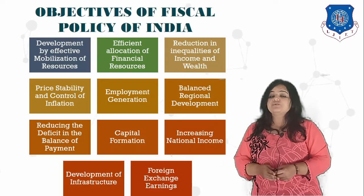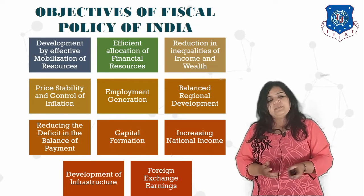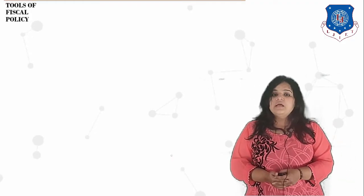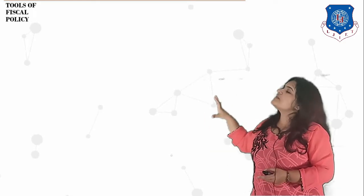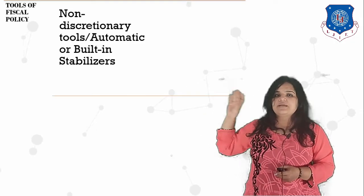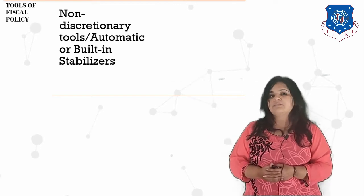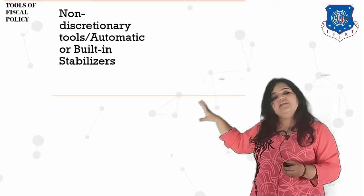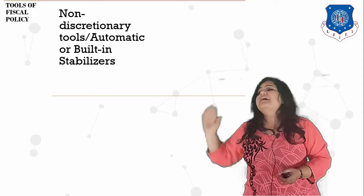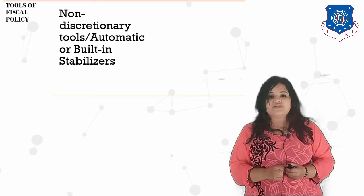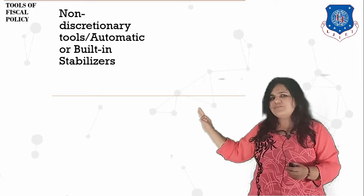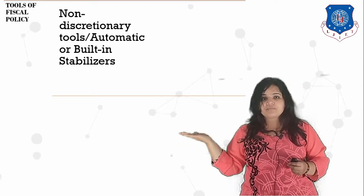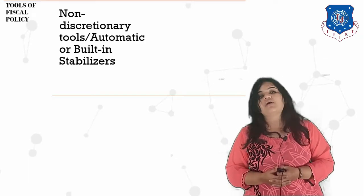The tools of fiscal policy are divided into two parts. The first type are non-discretionary tools, also called automatic or built-in stabilizers. Once introduced, these tools need not be changed — they automatically stabilize the economy during inflation and recession. They are introduced once by fiscal policy at the start of the financial year and throughout the year will automatically balance the economy.